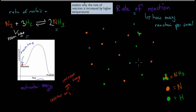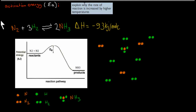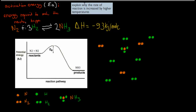The actual dot point itself says: explain why the rate of reaction is increased by higher temperatures. The rate of reaction is how many reactions there are per second. This has to do with activation energy. Activation energy is basically the energy required to make the reaction happen.